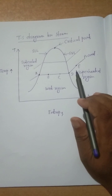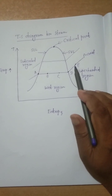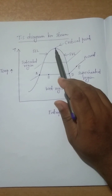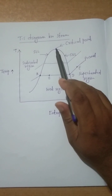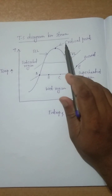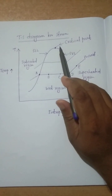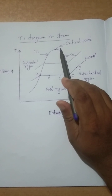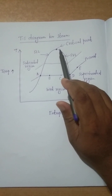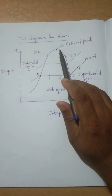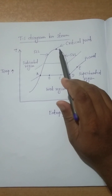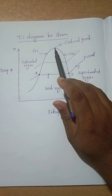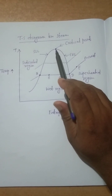The critical point is that point where the liquid is directly converted into the gaseous phase. The critical pressure for water is 220.09 bar and the critical temperature for water is 374.136 degrees centigrade.